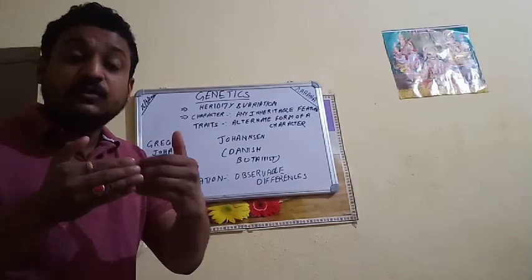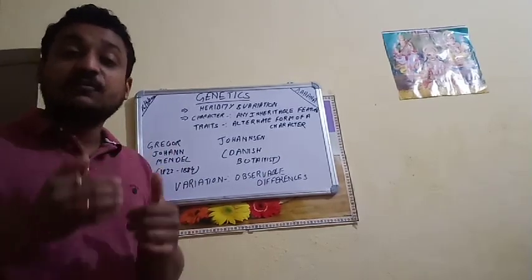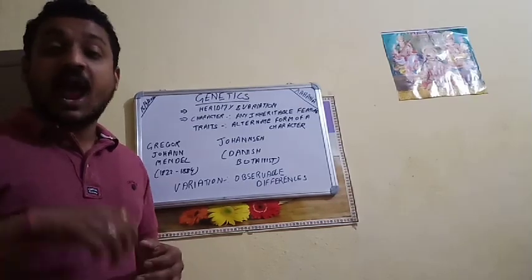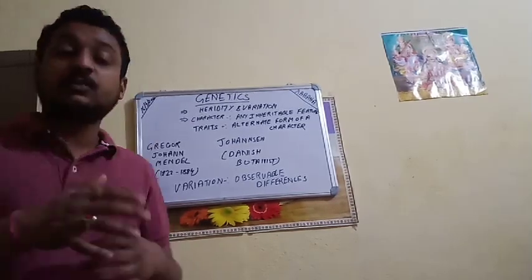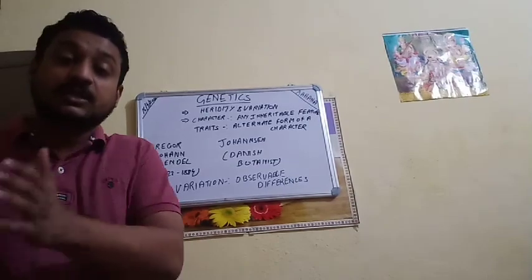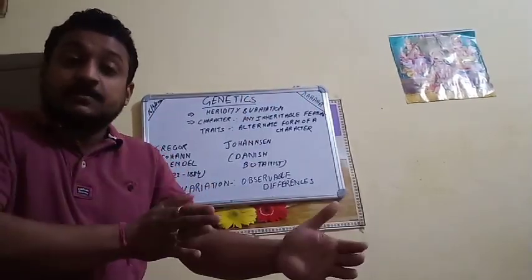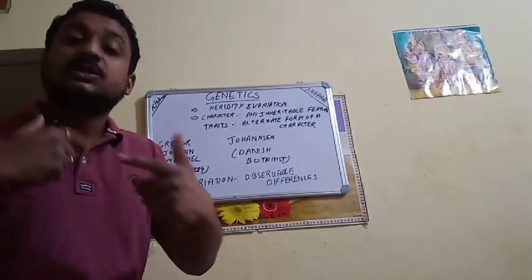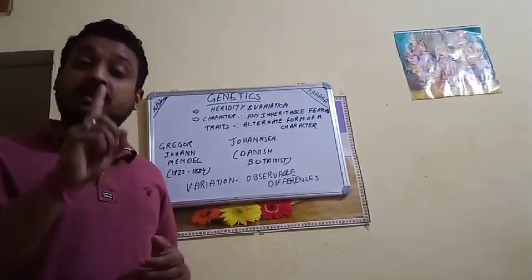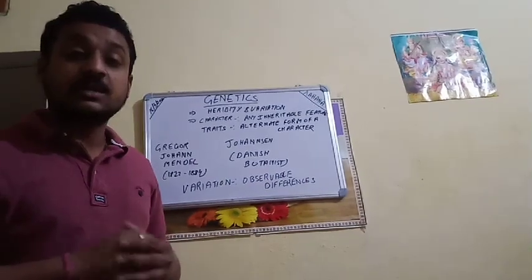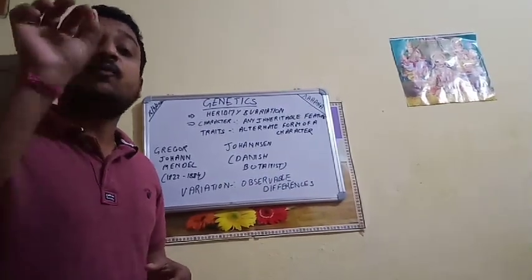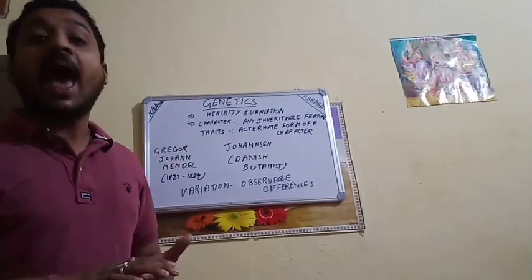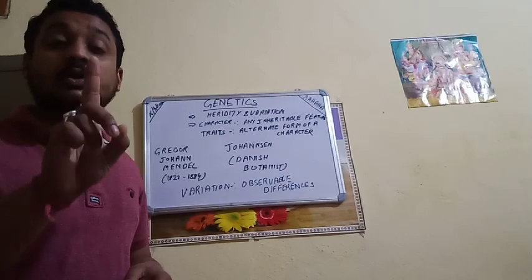The first cause of variation is reshuffling of genes. When genes reshuffle — changing position at the time of cell division and after fertilization when the sperm meets the ovum — the genes may exchange their positions and variation may take place. When there is some kind of error in copying the DNA, variation will also take place. Environment is equally responsible as well.